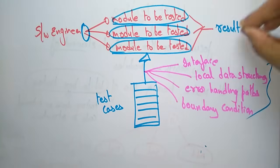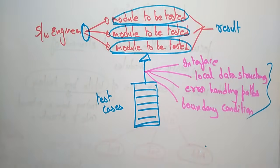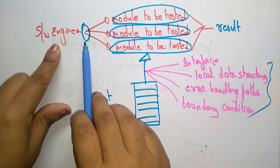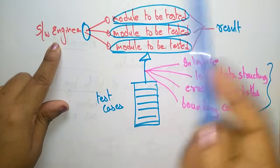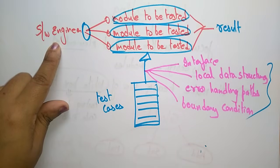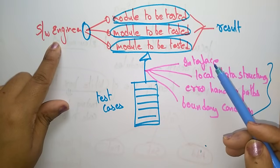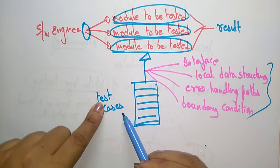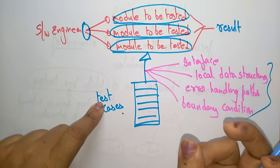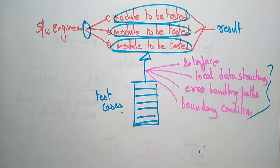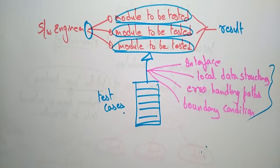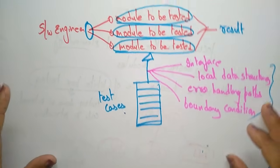In summary, the system is divided into modules, each module into sub-modules, down to the smallest element. Unit testing is performed on each smallest element. You check whether interfaces are working correctly, data structures are properly functioning, error handling techniques are provided, and whether boundary conditions are being crossed or not. The final result is then produced.